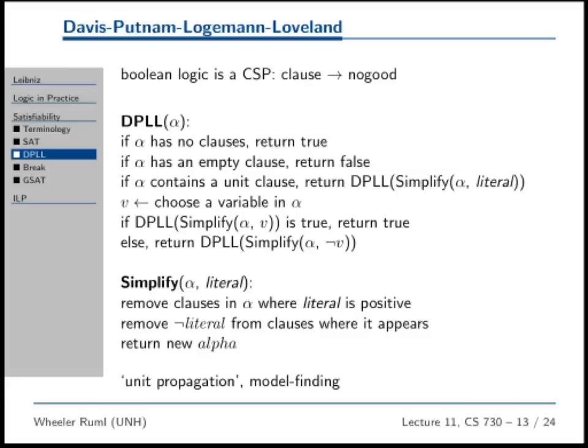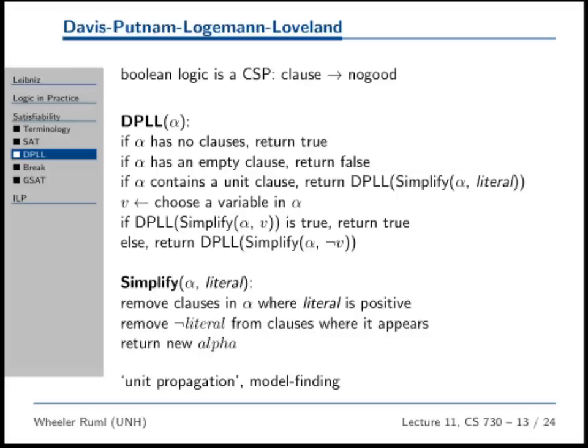To simplify the formula: we know the clause has to be true, so we know exactly what value to give that variable. If the clause is just A, then we know A has to be true. Every place where that literal occurs positively, we've now satisfied that clause. We'll say that A is true and remove all those clauses where the literal appears positively. In all the clauses where the literal appears negatively, we know that literal can never make the clause true, so remove it from the formula.